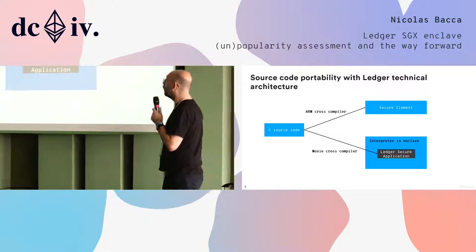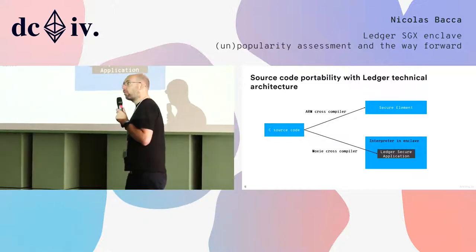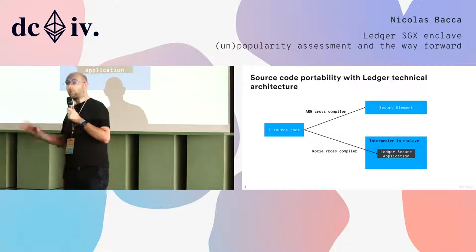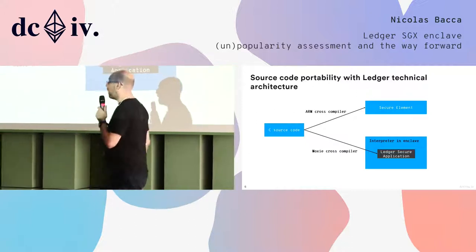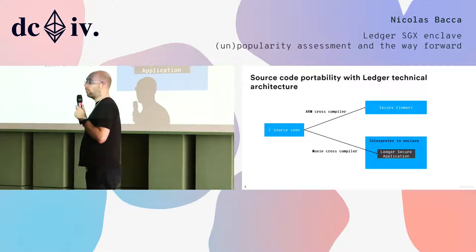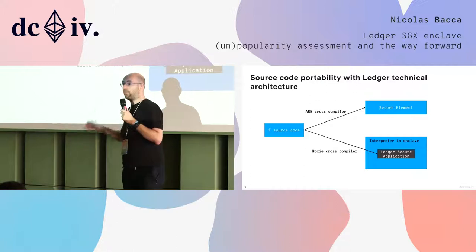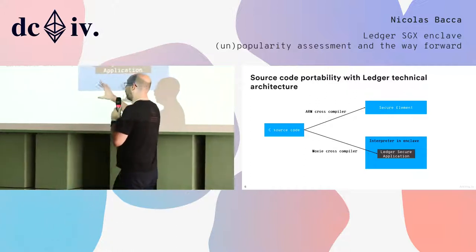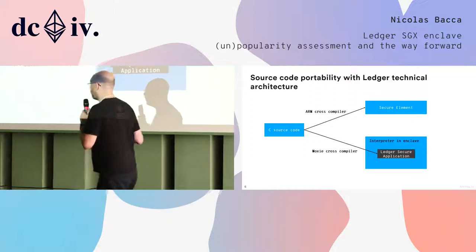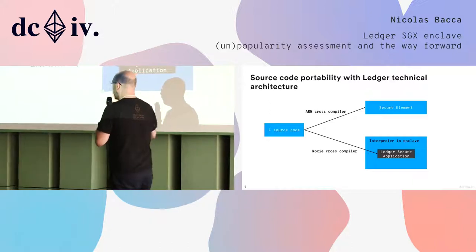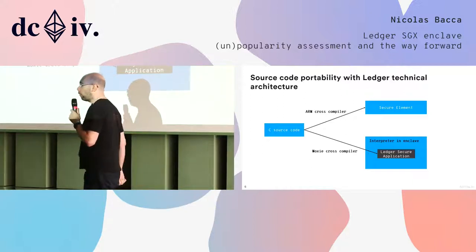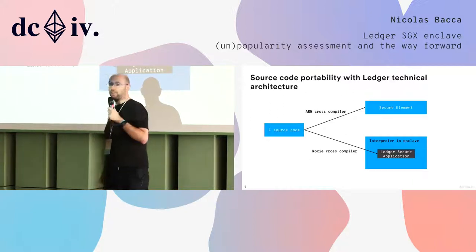In our architecture today, the way we achieve source code portability between secure element and enclaves is quite simple. We focus on C source code portability — we write the code once with the same API. When we work natively on a secure element, we compile to ARM, because our secure elements are based on SecureCore, which is a secure ARM. When we work on an enclave of any kind — SGX, a TEE, or an HSM — we cross-compile to Moxie, which is an open architecture previously used in the Bitcoin project as an experiment by Jeff Garzik.